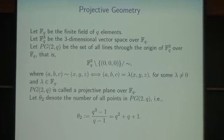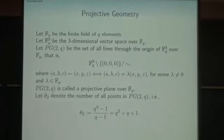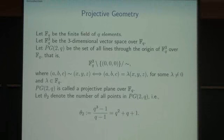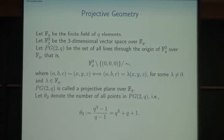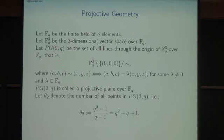FQ is the finite field of Q elements, and FQ cubed is the set of triples. Let PG(2,Q) be the set of all triples in FQ cubed except the zero vector, with equivalence relation — meaning any vector and its scalar multiple are the same in PG(2,Q). So PG(2,Q) is called the projective plane over FQ. We can compute the number of points: it is Q cubed minus one over Q minus one, which equals Q squared plus Q plus one.